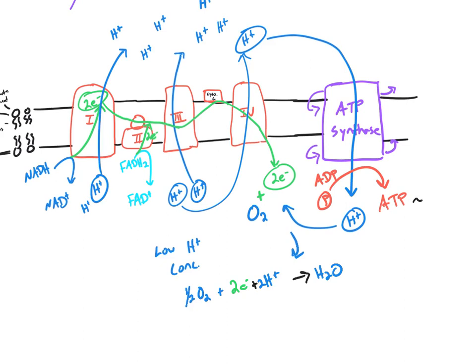Ultimately, about 32-ish ATP are produced per glucose molecule.